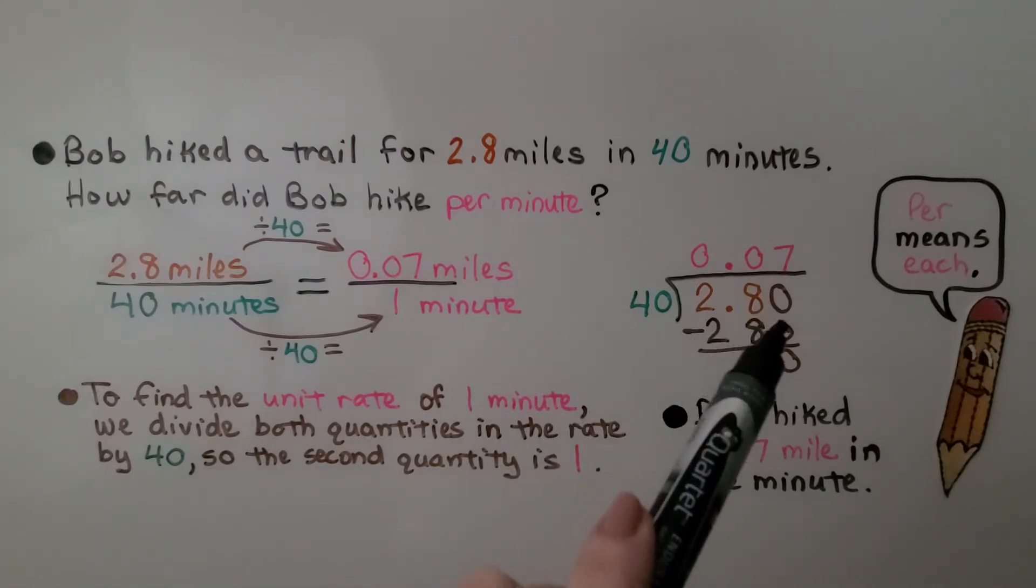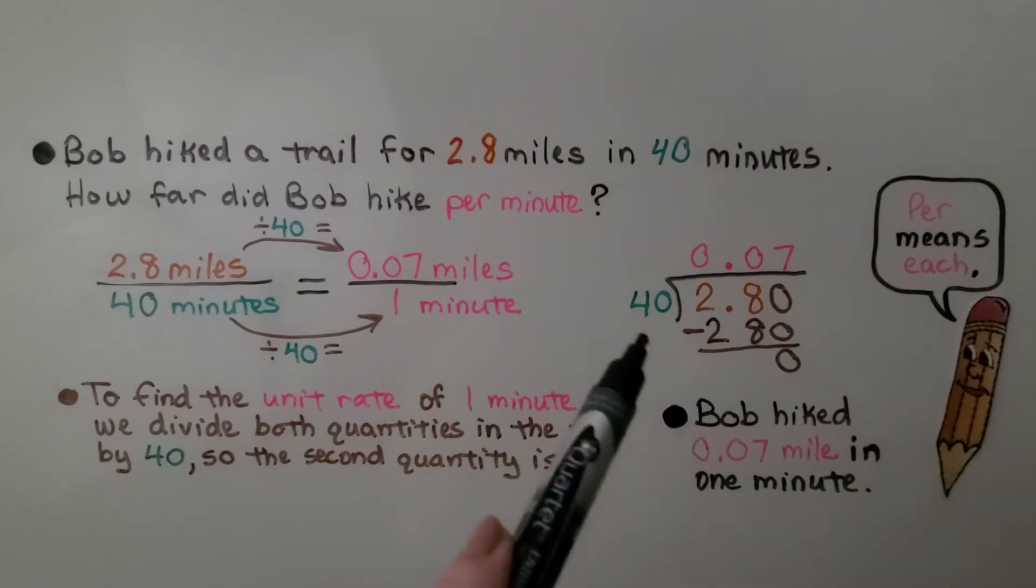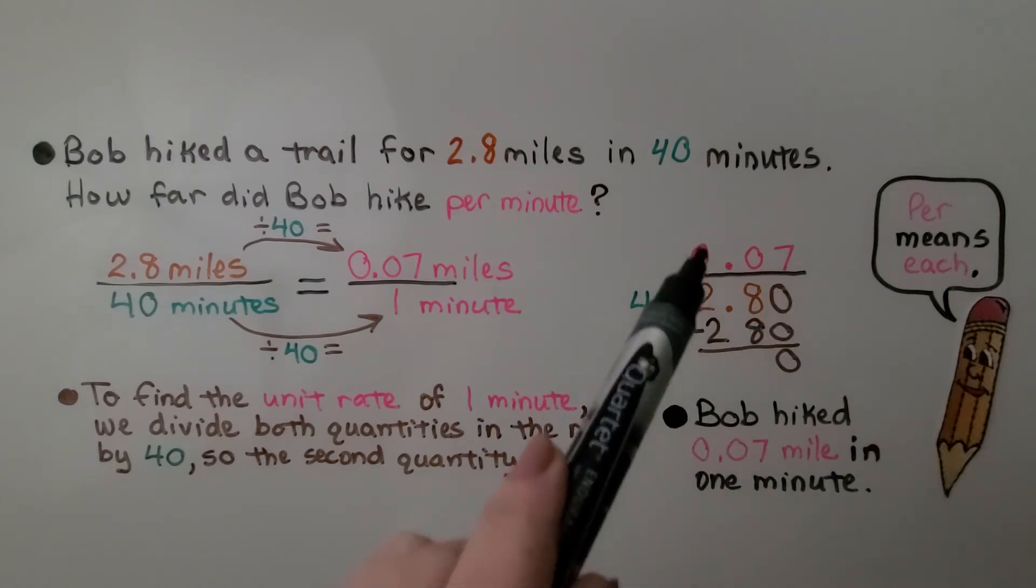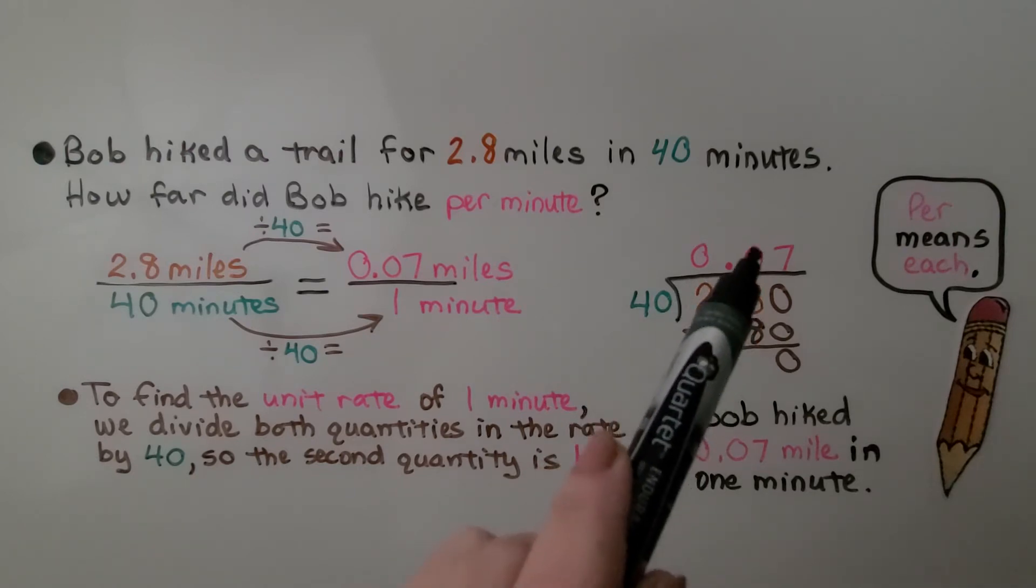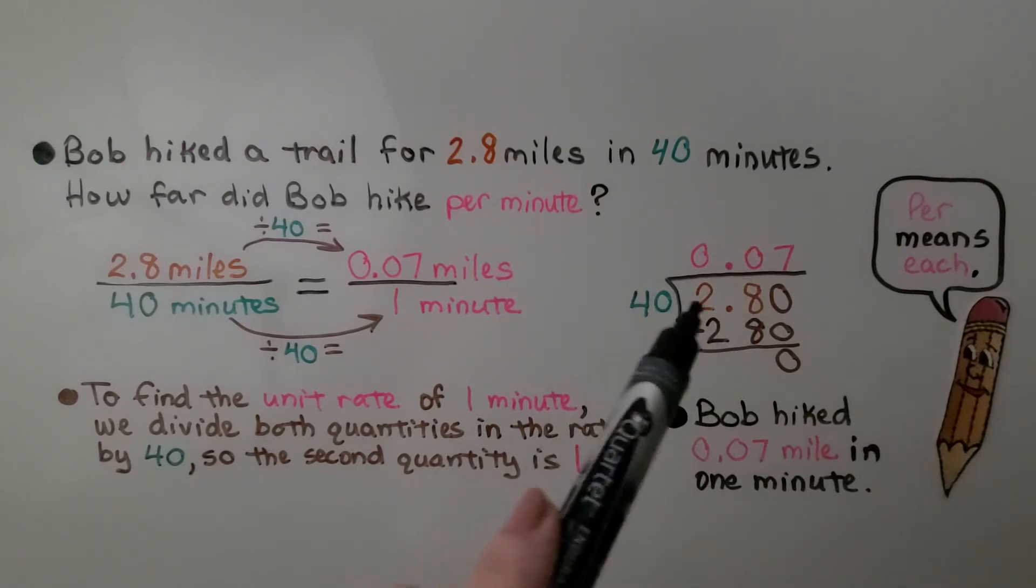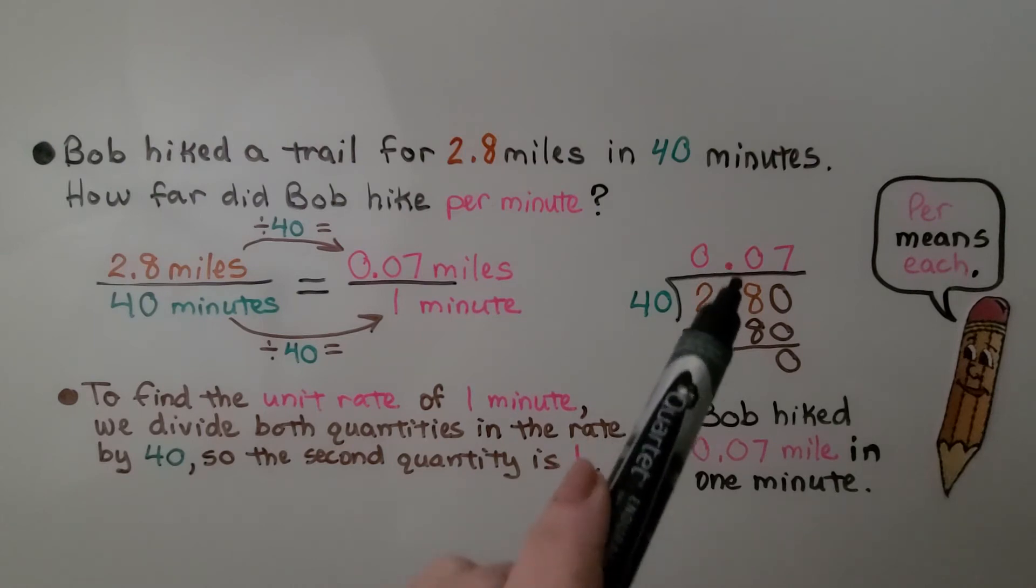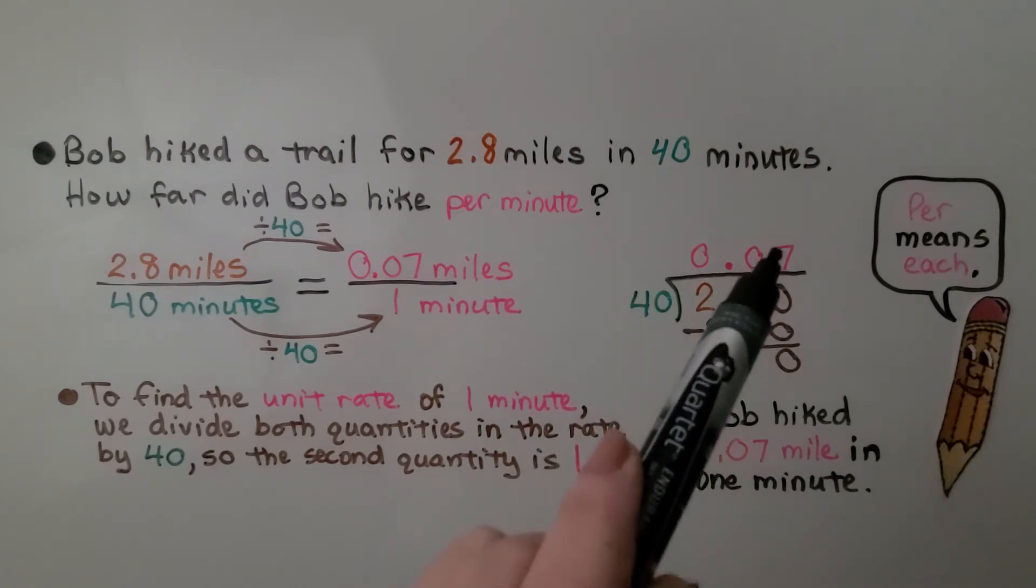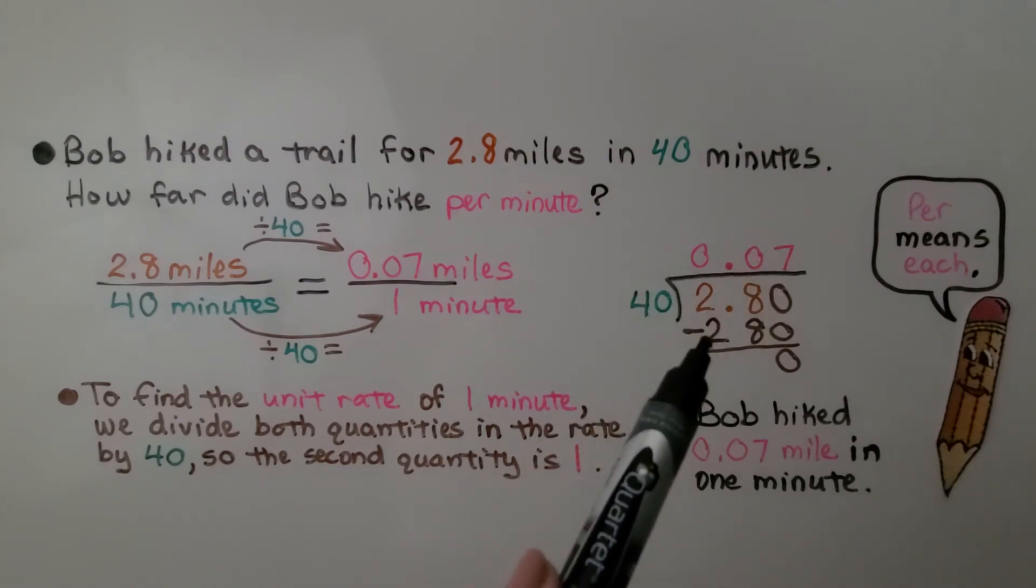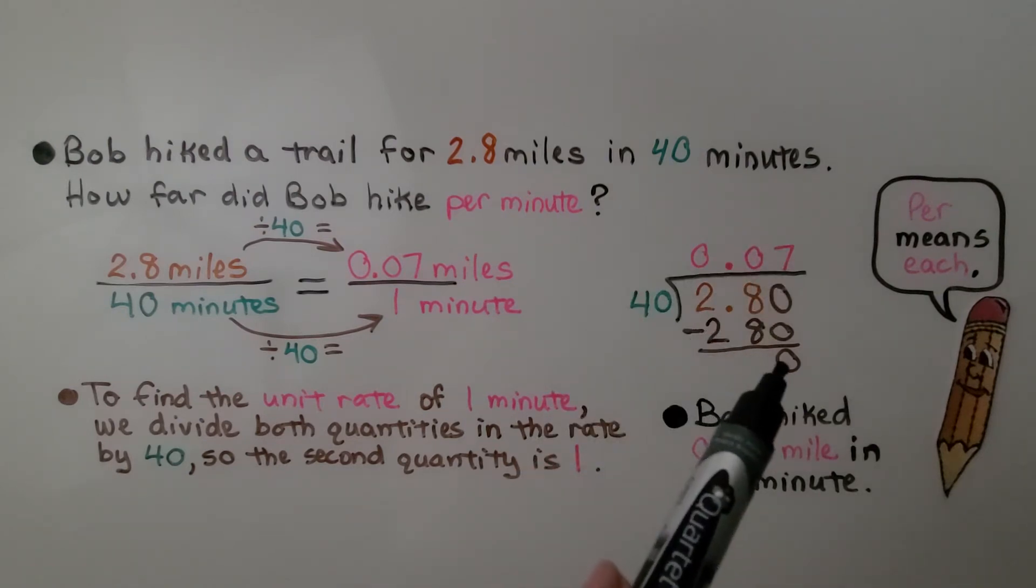We're going to have to add zeros as placeholders. Because 40 can't fit into two, so we have a zero there. And 40 can't fit into 28, so we have a zero there. And that's a whole number, so we just brought the decimal point straight up. And 40 can fit into 280 seven times. 40 times seven is 280. We subtract to get zero. We know it's seven hundredths.